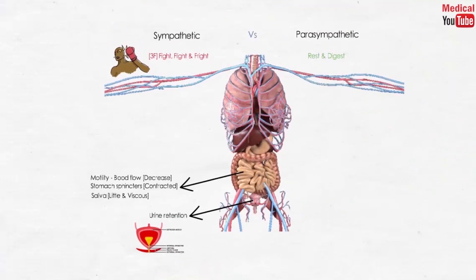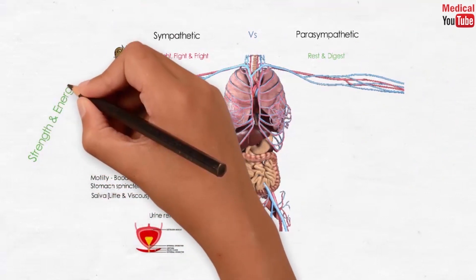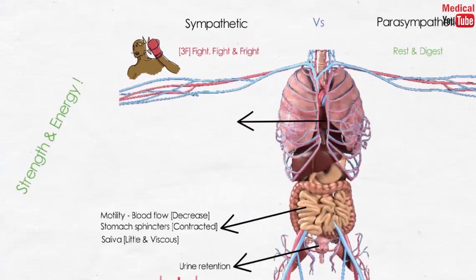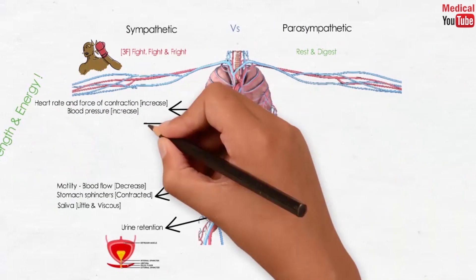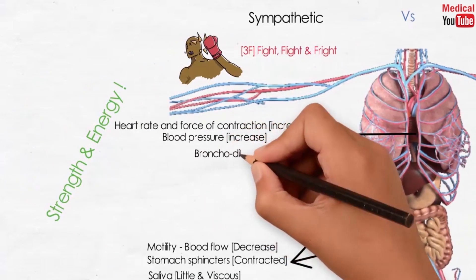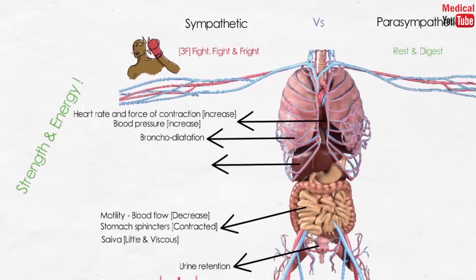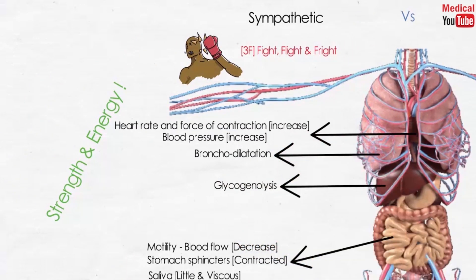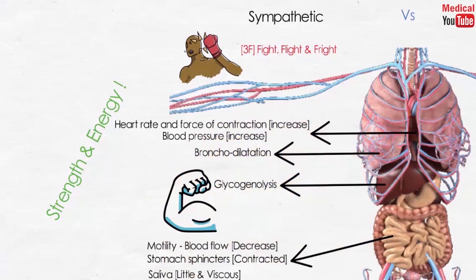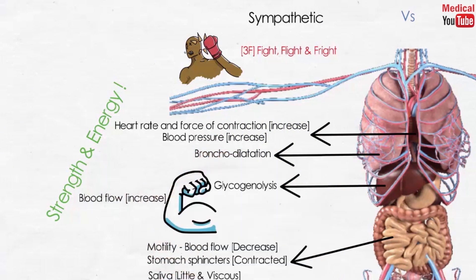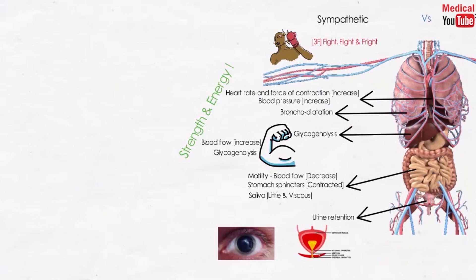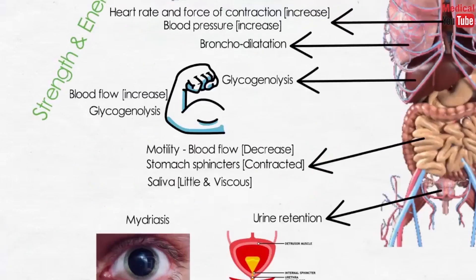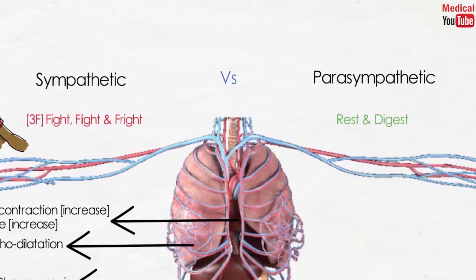What you really need in a fight or stressful condition is strength and energy. Heart rate and force of contraction increase, and blood pressure increases through contraction of the blood vessels. The lungs help you breathe more and get more oxygen through bronchodilation. The liver helps you get more glucose and energy through glycogenolysis. Blood flow to skeletal muscles increases through vasodilation of skeletal muscle blood vessels, and glycogenolysis increases. The eye pupil gets dilated, which is known as mydriasis. These are the actions of the sympathetic nervous system.